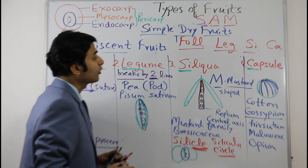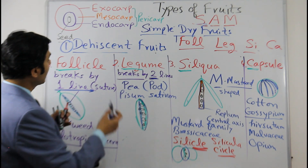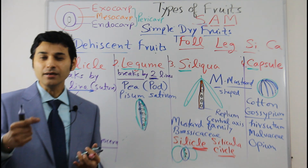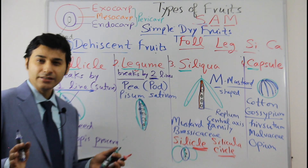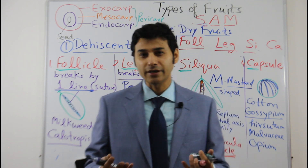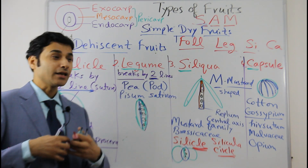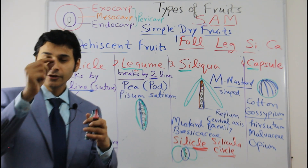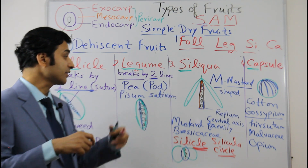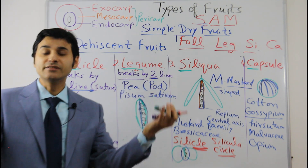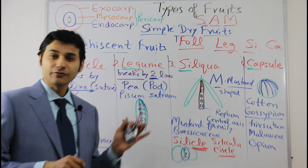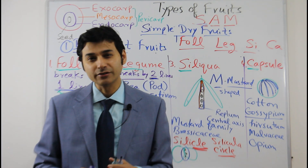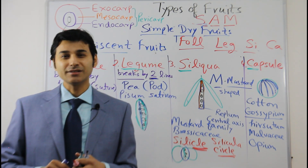So these are four — or you can say five, because siliqua has two subtypes — general types of dry dehiscent fruits. We have finished simple dry dehiscent types with their examples. I hope it is now very easy and you will not confuse or forget them. Dehiscent fruits break and release many seeds; they are syncarpous or monocarpellary depending on the type. Thank you very much, please share and subscribe to the channel. Stay healthy, stay safe.